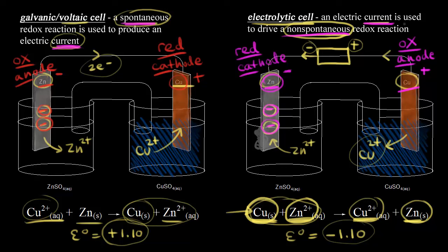The signs of the electrodes are opposite for voltaic and electrolytic cells. In the voltaic cell, the anode was the zinc electrode and it was the negative electrode, because zinc was the source of electrons. But in the electrolytic cell, the negative electrode is the cathode, because electrons are forced onto it by the battery. For an electrolytic cell, the negative electrode matches the negative terminal of the battery, and the positive electrode matches the positive terminal — just look at the battery to figure out which electrodes are which.